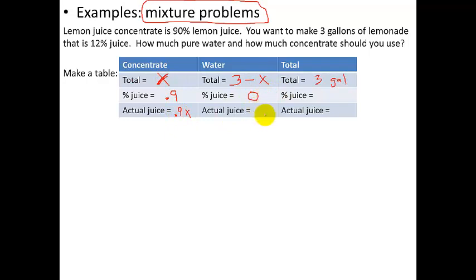Then over here, I have actual juice zero. And what percent juice do I want at the end? 12%. So 0.12. How much actual juice is here? Well, I have 3 gallons. And I know that my percent juice is 0.12. So if I multiply 3 times 0.12, I get 0.36. 0.36 of actual juice.